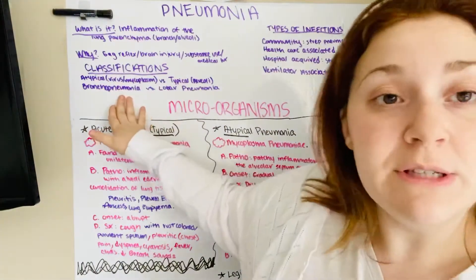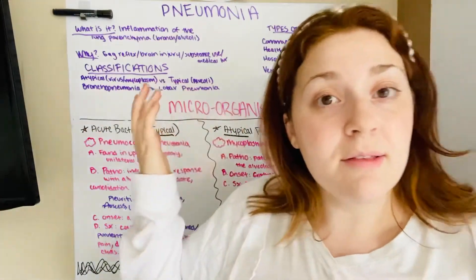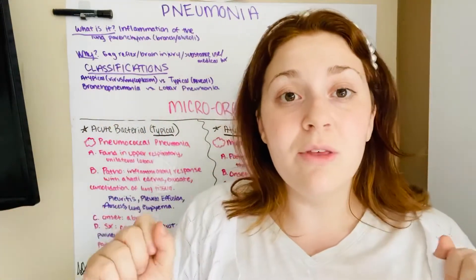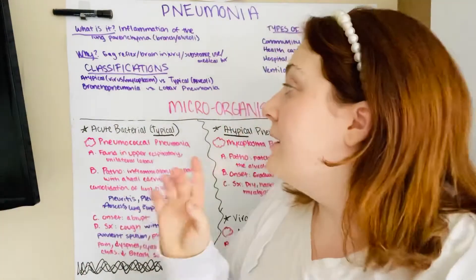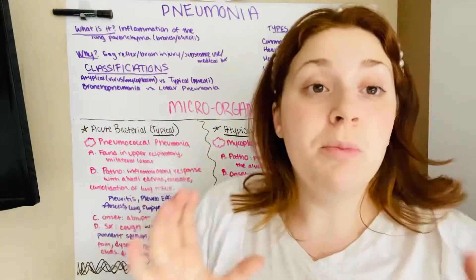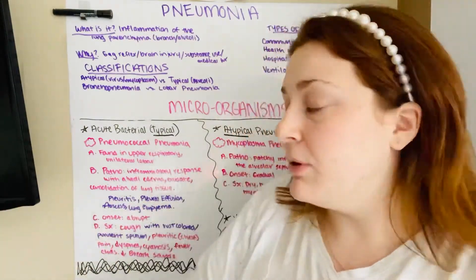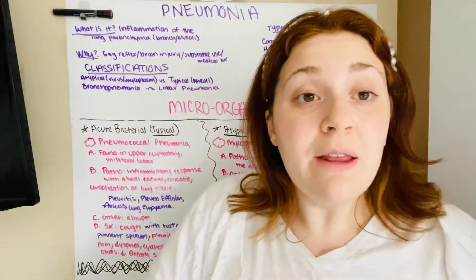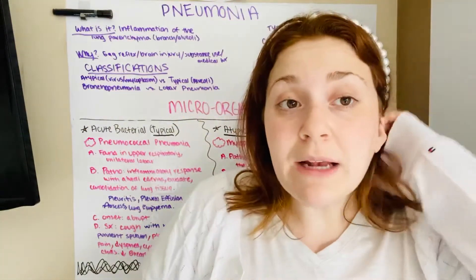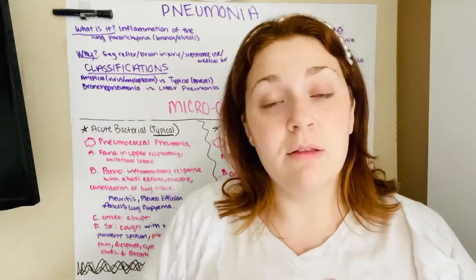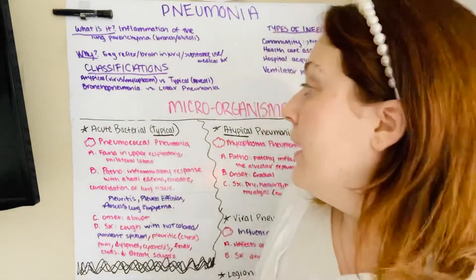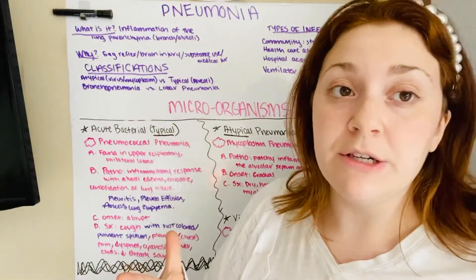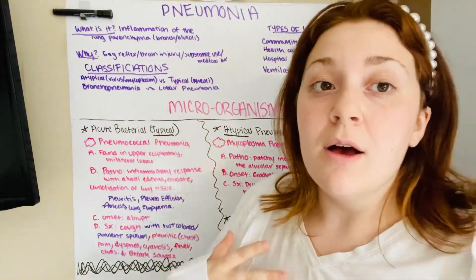So what are the different types? There is atypical — not a normal pattern. These are viruses and mycoplasma. And then typical, which is actual bacteria in the alveoli itself. You're going to see this in acute bacterial infections.